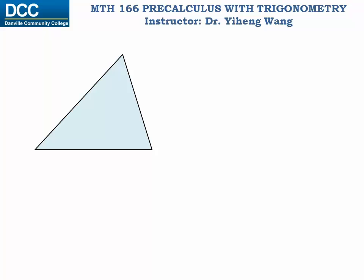For a given triangle, there are six parameters or six measurements associated with it. The three measurements are angles — let's call them angles A, B, and C in capital letters. The remaining three are the lengths of the three sides. The side opposite to angle A is side a in small letter, the side opposite to angle B is side b, and similarly side c is the side opposite to angle C.